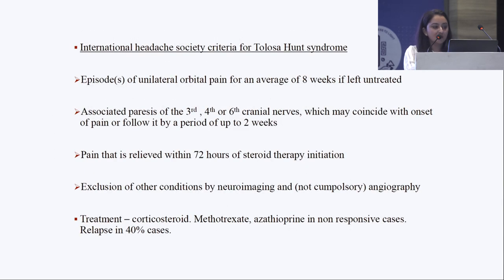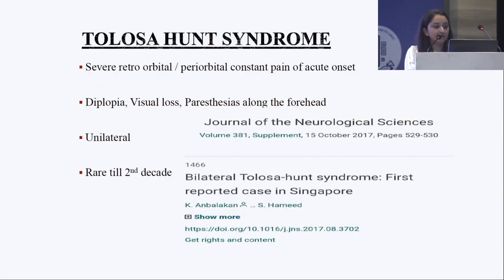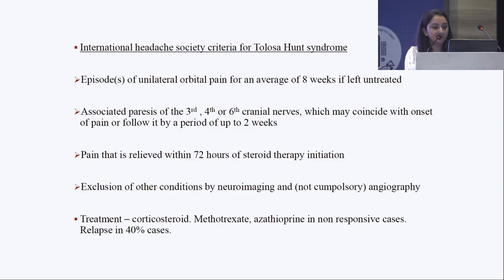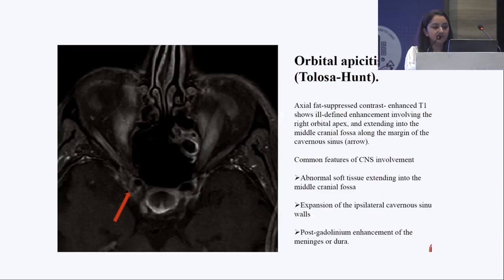Typical features of Tollosa-Hunt syndrome include diplopia, visual loss, paraesthesias along the forehead, and unilateral involvement. Diagnostic criteria include episodes of unilateral orbital pain for an average of eight weeks, associated paresis of cranial nerves, pain relieved within 72 hours of steroid therapy, and exclusion of other conditions by neuroimaging and angiography. In spite of treatment, relapse has been seen in about 40% of cases.